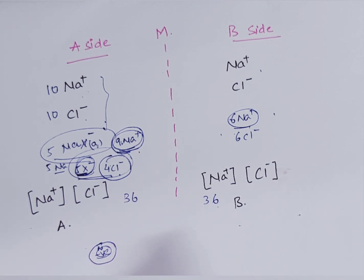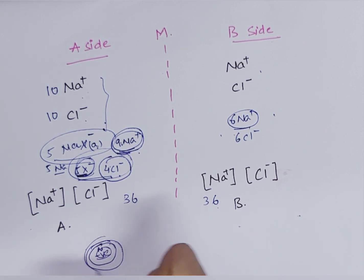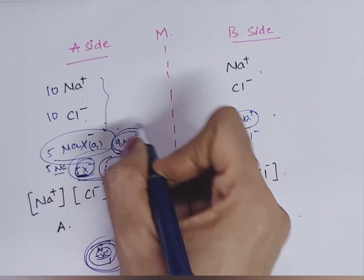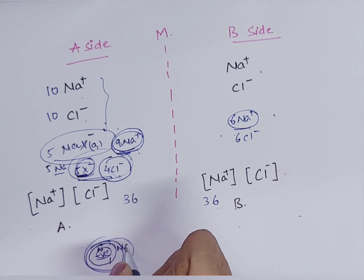And because of that, there are more osmotically active particles in the cell than interstitial fluid. And because of that, the cell will be swollen and cell may burst. And to prevent this, the same condition like this will happen. More sodium inside, less sodium outside. So the cell will be swollen and it will burst.